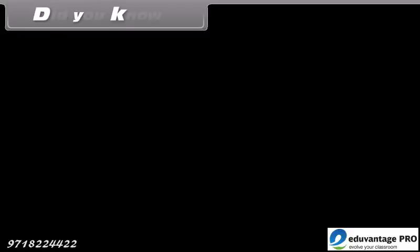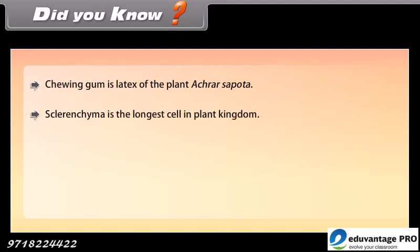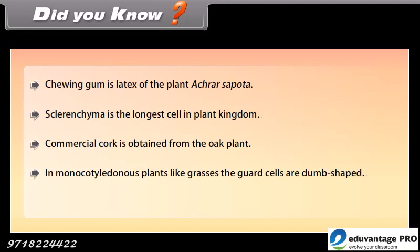Did you know? Chewing gum is the latex of the plant Achras sapota. Sclerenchyma is the longest cell in the plant kingdom. Commercial cork is obtained from the oak plant. In monocotyledonous plants like grasses, the guard cells are dumbbell-shaped.